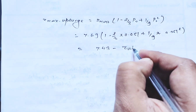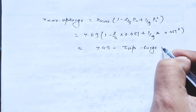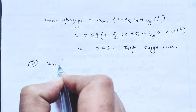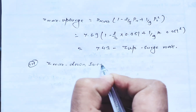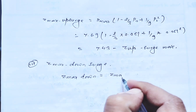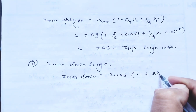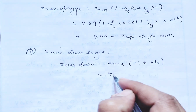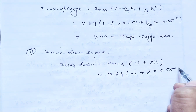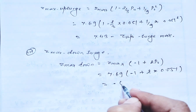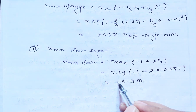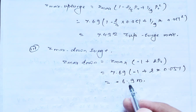In the third step, we calculate the maximum downsurge using the formula: Z_max_downsurge = Z_max × (−1 + 2 × ρ_0). Substituting values: Z_max_downsurge = 7.69 × (−1 + 2 × 0.051) = −6.9 meters. The result is negative, which means that the water level in the surge tank will be below the reservoir level.